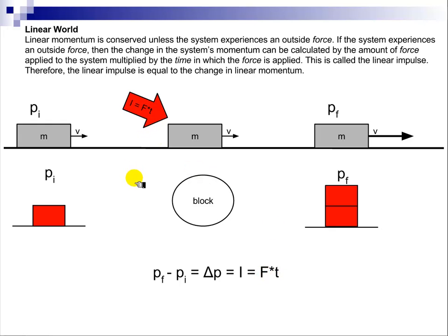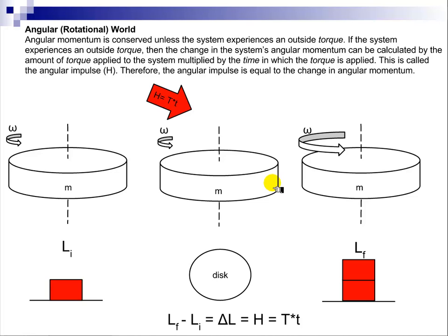So the impulse momentum theorem says the change in momentum is equal to the impulse. This is an example of where momentum is not conserved. So let's take this to the angular or rotational world.